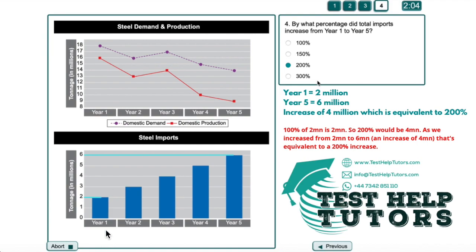We can see in year 1, imports was at 2 million and in year 5, imports was at 6 million. So it increased from 2 million to 6 million, an increase of 4 million.